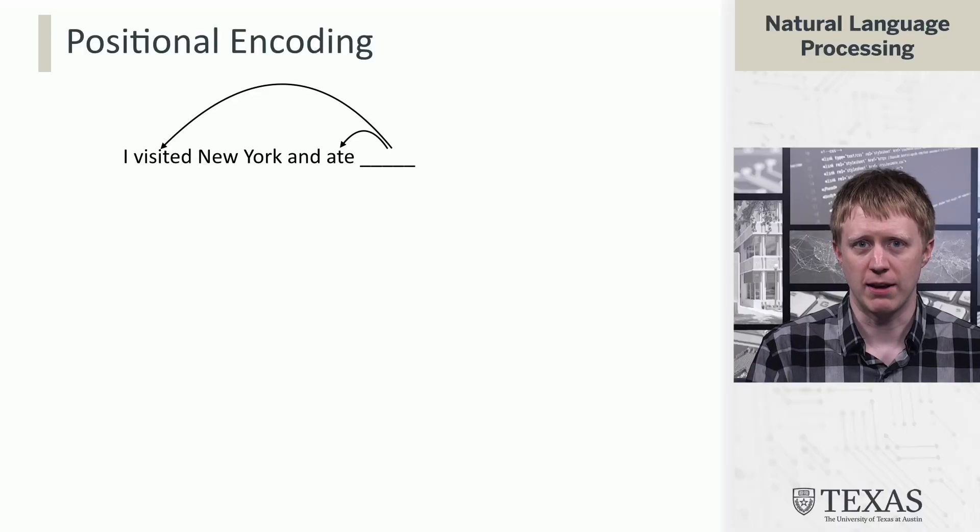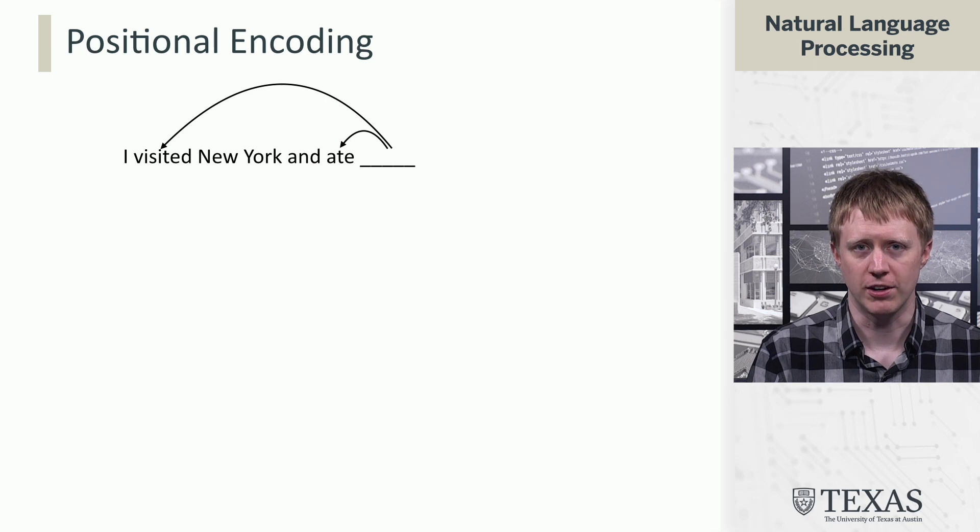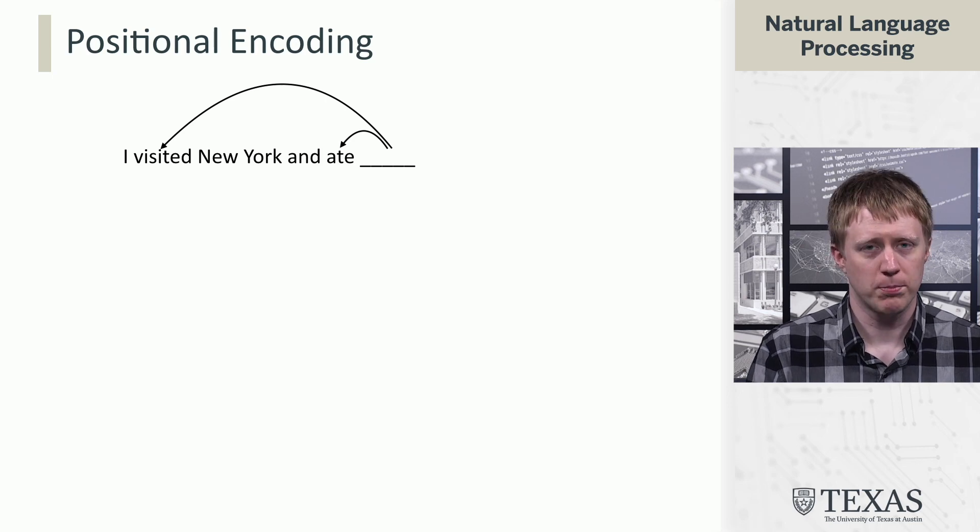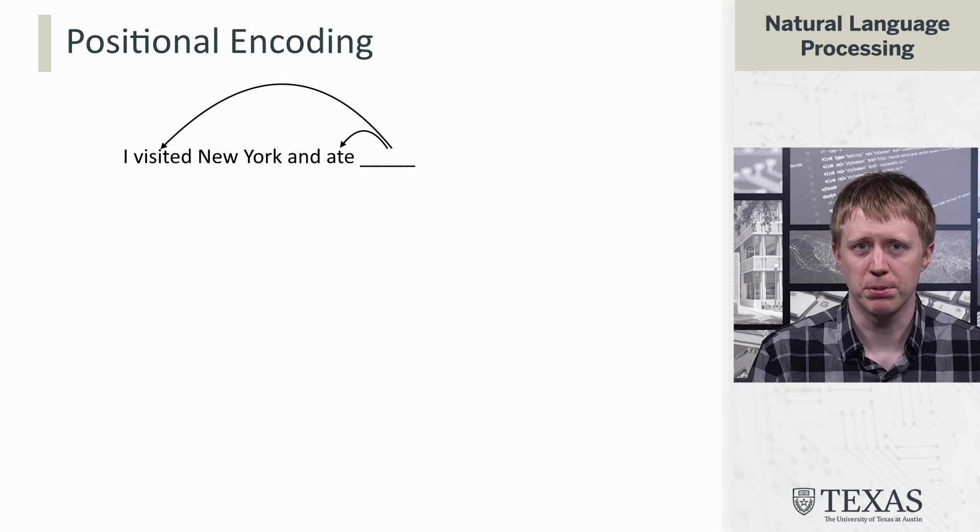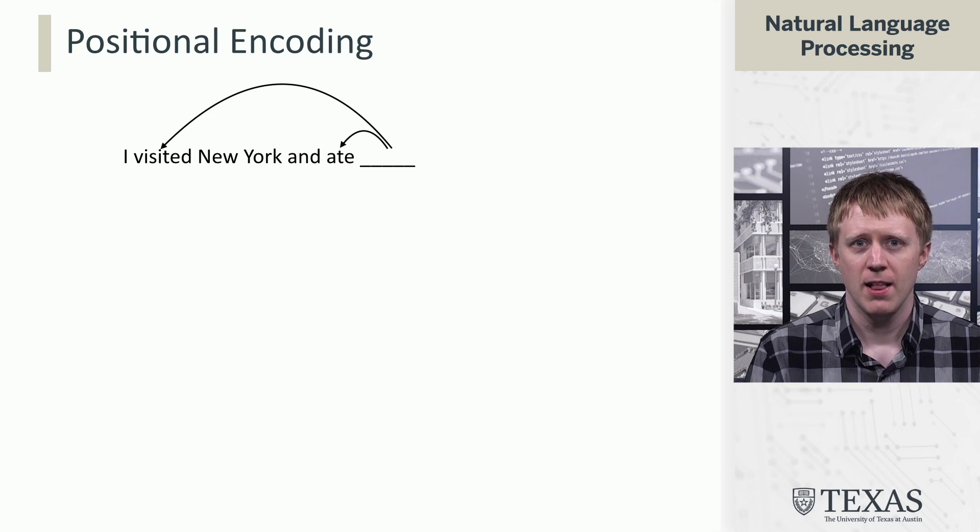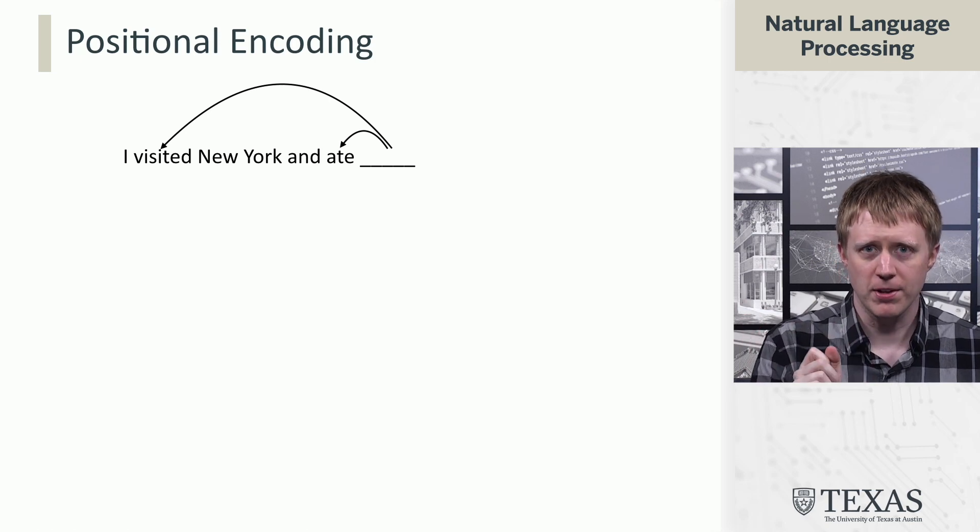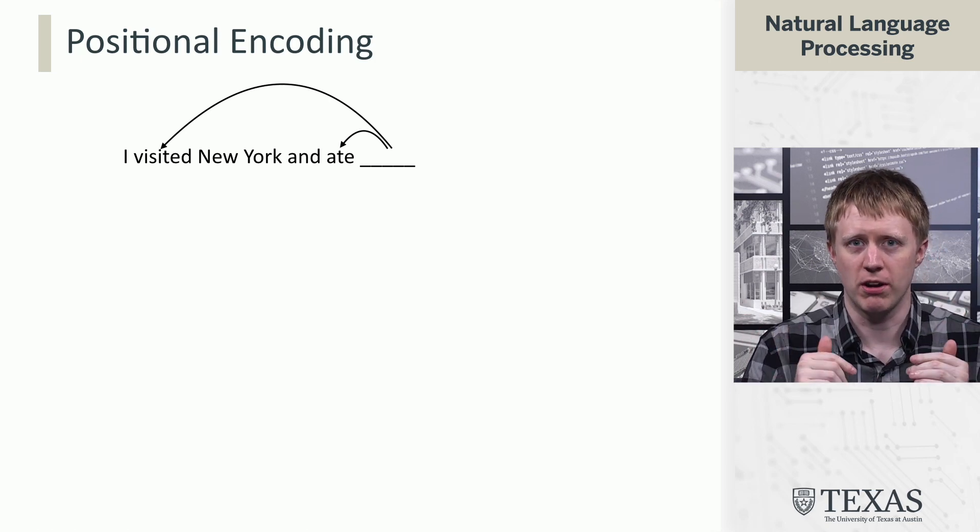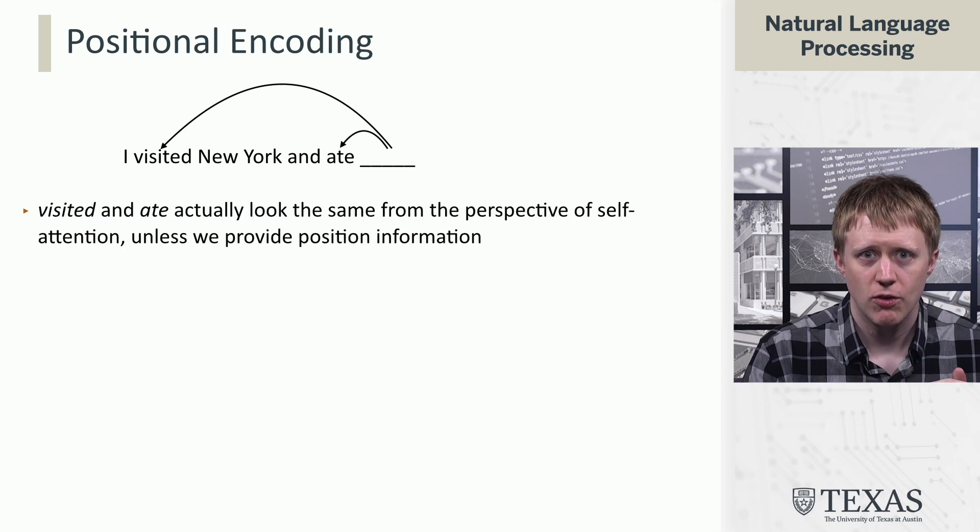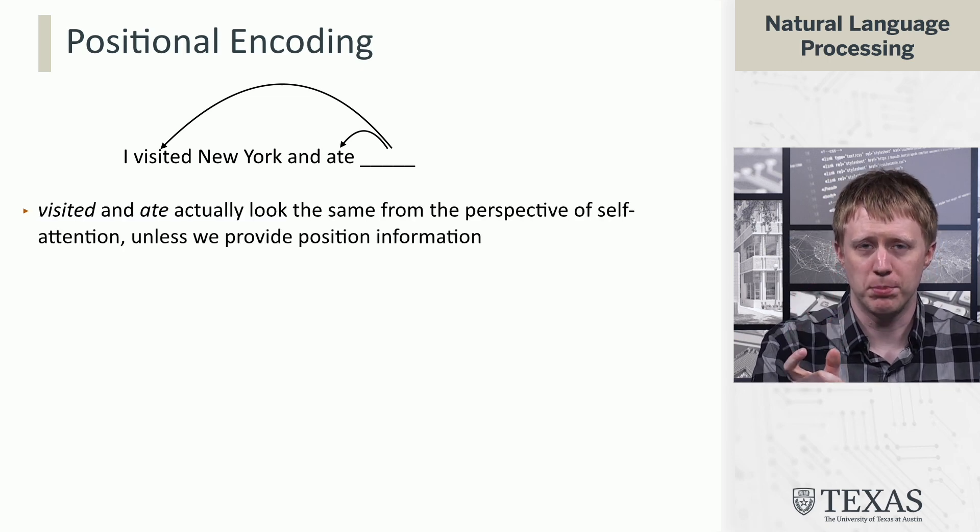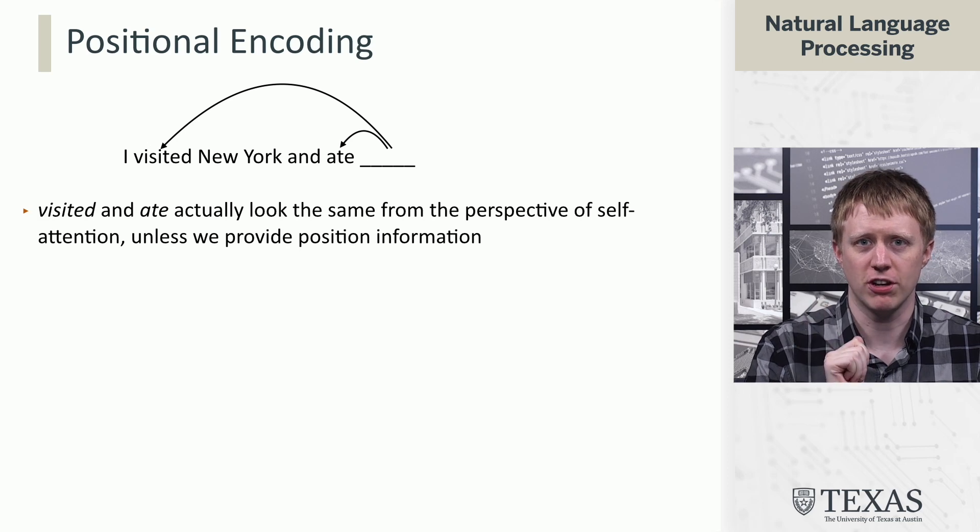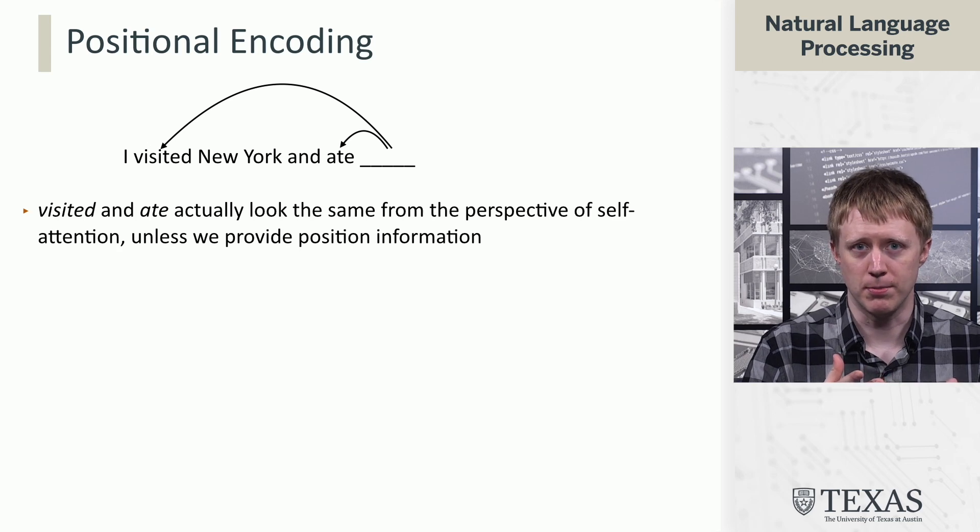So if we're trying to do language modeling and predict what comes next here, we need to look back at the context as we've been discussing. But one key problem that we'll run into if we implement what we've discussed so far is that we don't actually know where this blank is sitting. Remember that we instantiated all these keys, all these queries, but from the perspective of a query on this blank, visited and ate actually looked like the same thing, right? Because we have no notion of position in this model so far.